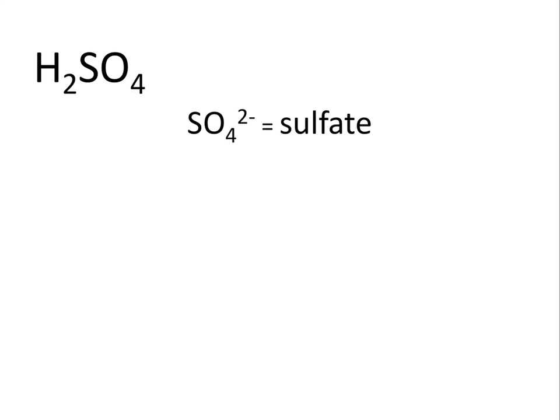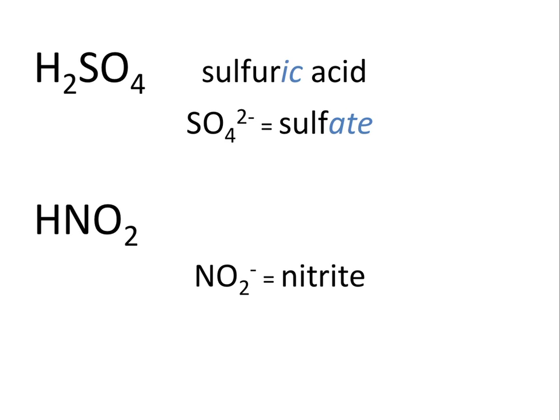In this example, H₂SO₄ — we know that SO₄²⁻ is the ion sulfate. So to name this acid, we change the -ATE ending to -IC, naming this acid sulfuric acid. The polyatomic ion NO₂⁻ is named nitrite, so to name the acid HNO₂, we change the -ITE ending to -US, giving this compound the name nitrous acid.